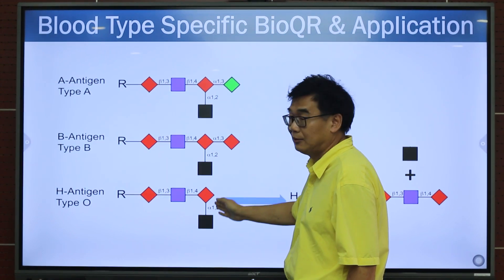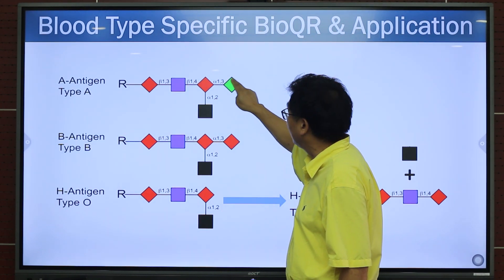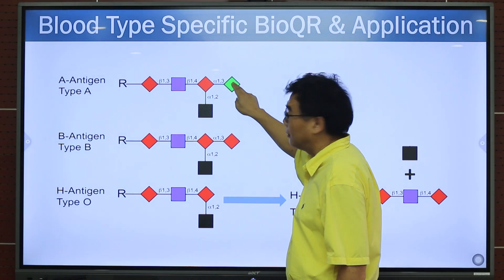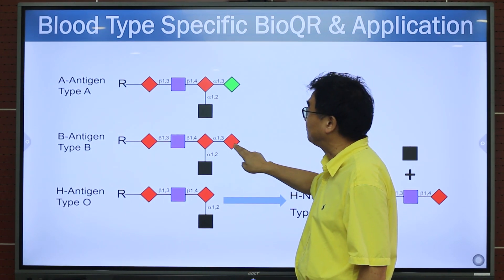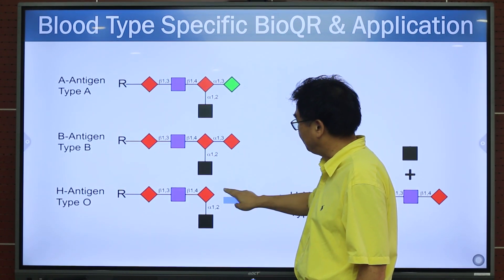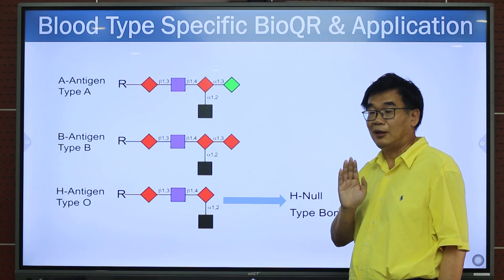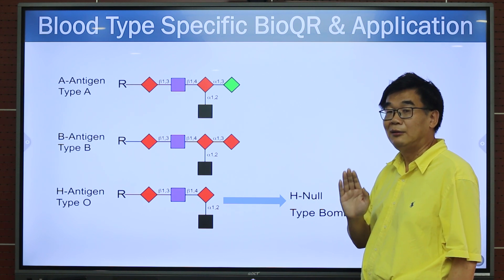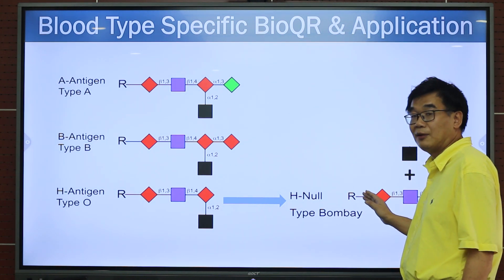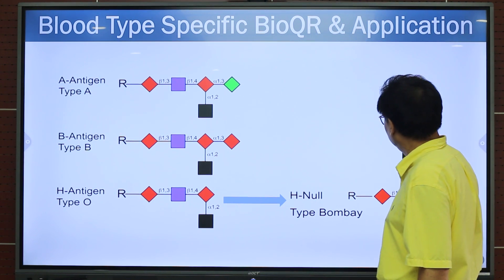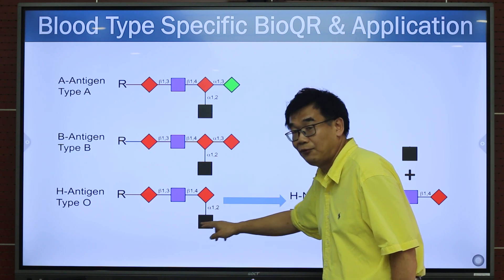This is the root of the bio-QR. The A type has a green spot here, and the B type has a red spot here. For the O type, this is empty. But you may not know that there is another rare blood type called the Bombay blood type. For people in this group, their bio-QR on their blood does not have fucose.